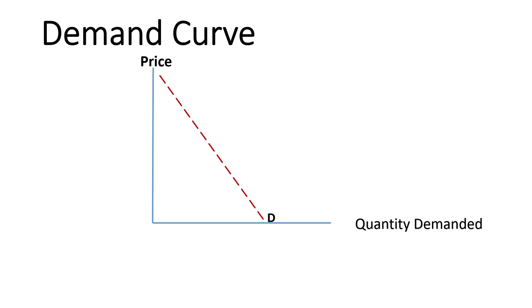Demand curve: this curve shows the inverse relationship between price and quantity demanded. When price increases, quantity demanded decreases; when price decreases, quantity demanded also increases. For this reason, the demand curve is downward sloping.